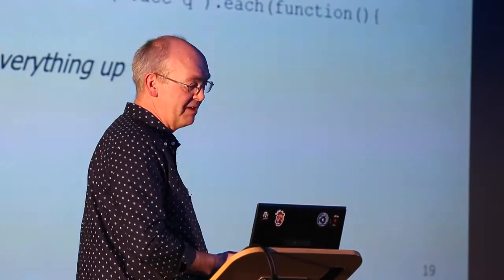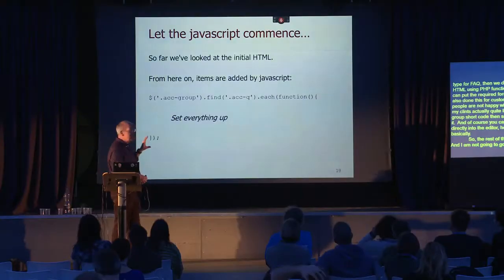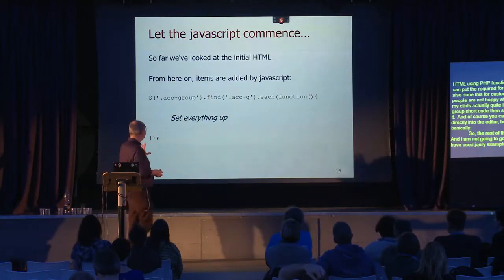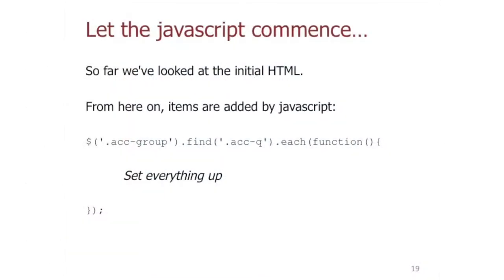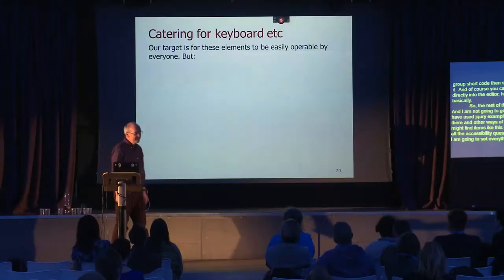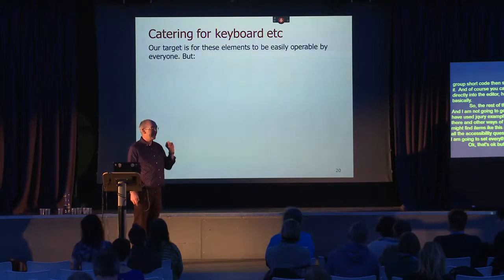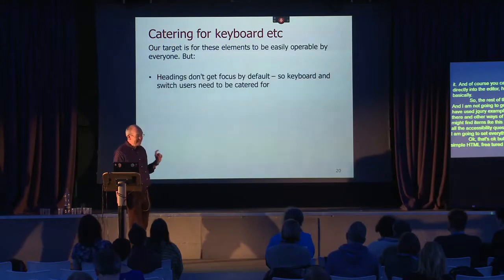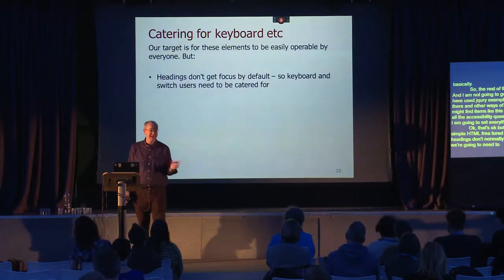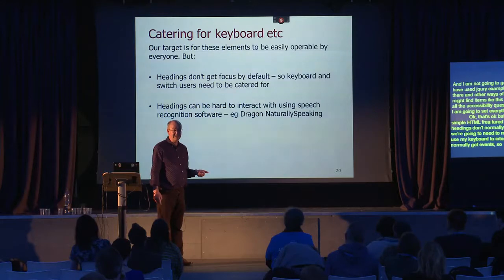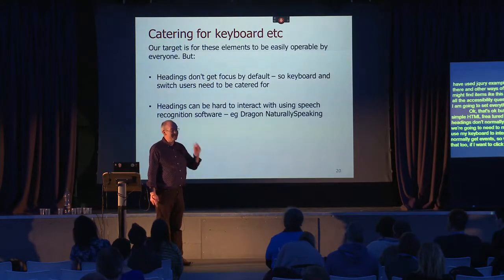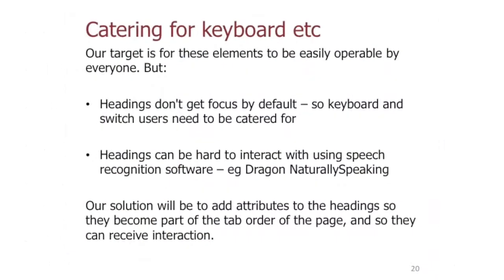The rest of the story is all JavaScript. I've used jQuery for my example, though other libraries are available. Typically you'd find items like finding all accordion questions and setting everything up. The key issue is that headings don't normally get focused by default, so we need to make them focusable for keyboard interaction, and they also don't normally receive events — so we need to handle click events and Enter key presses, which is also important for voice recognition software.